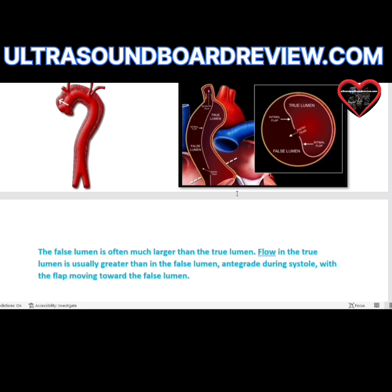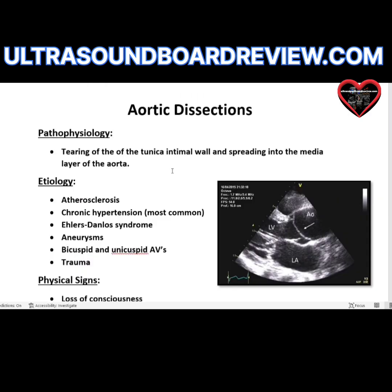Blood is going to naturally come through the true lumen, fill in there, and you're going to have more volume on that side. That being said, if you have more volume on that side, it's going to push this wall up against the false lumen. It's a tearing of the tunica intima that spreads into the media layer of the aorta. The tunica adventitia is not affected.